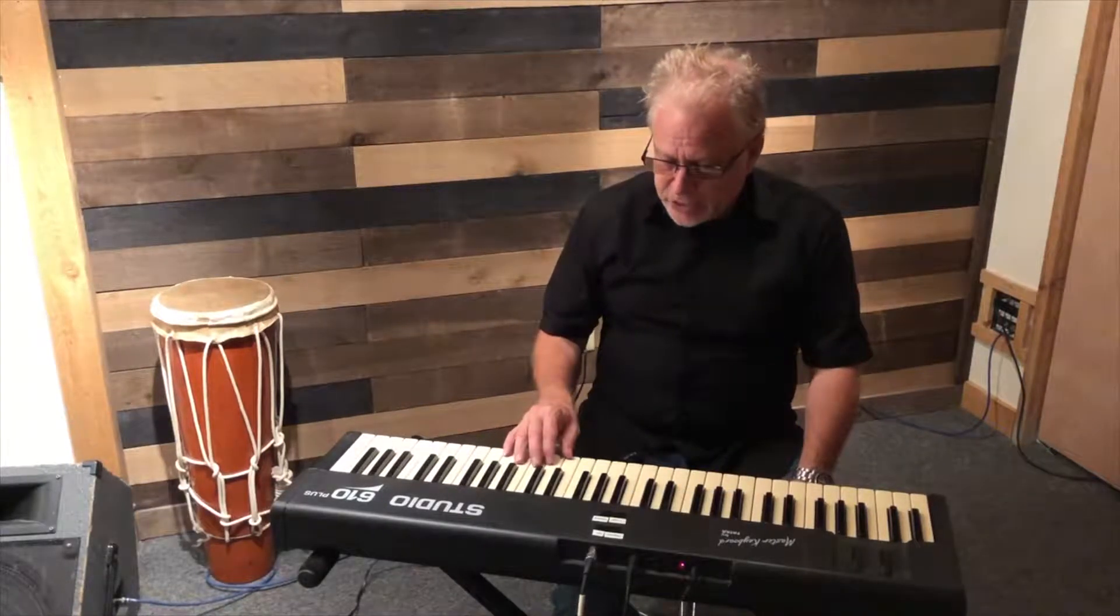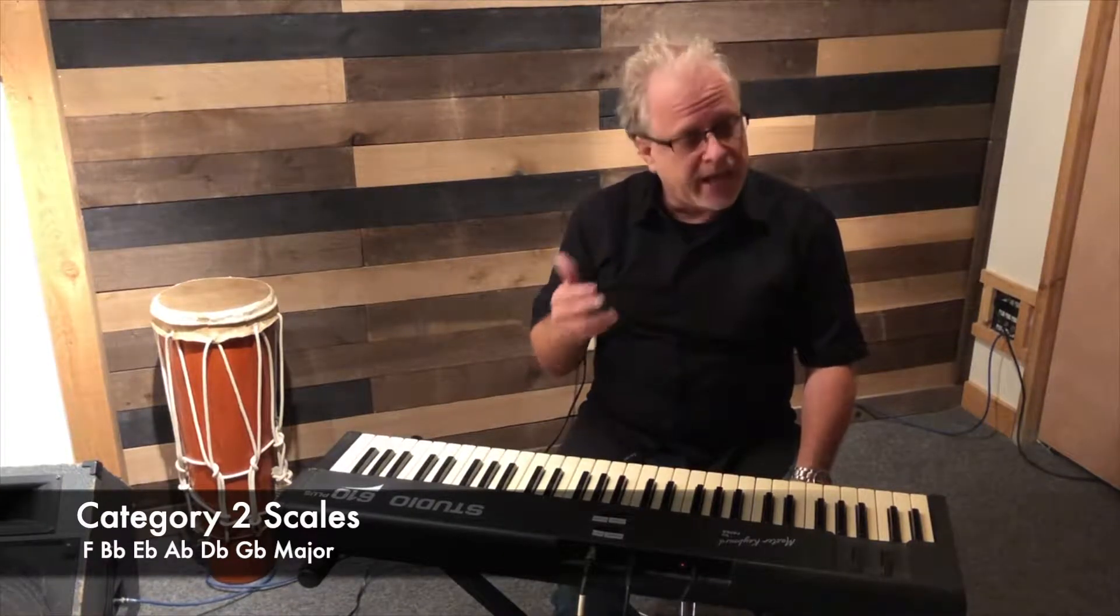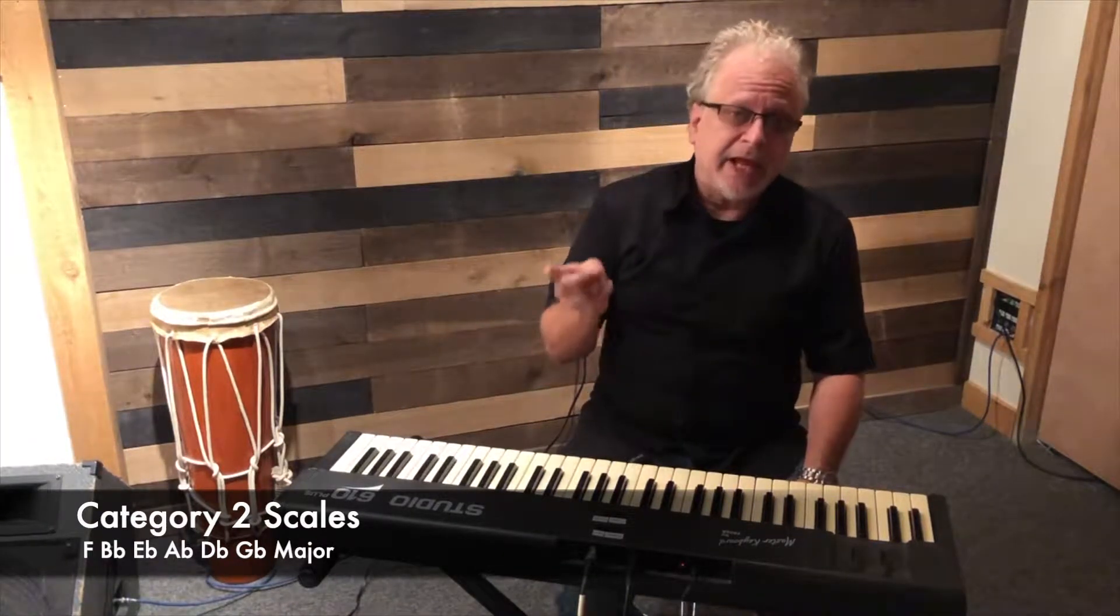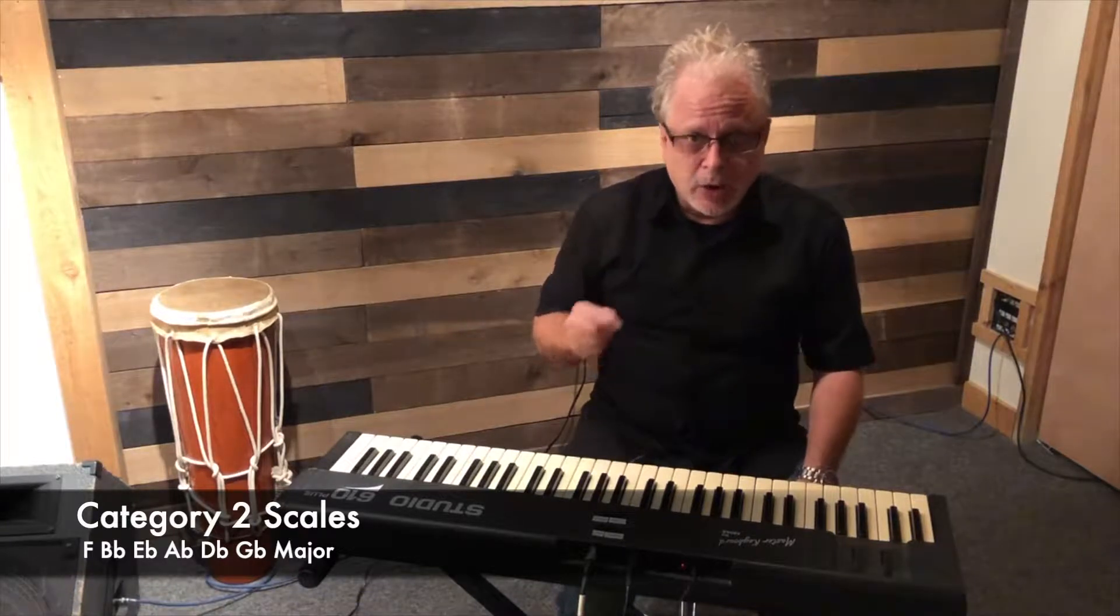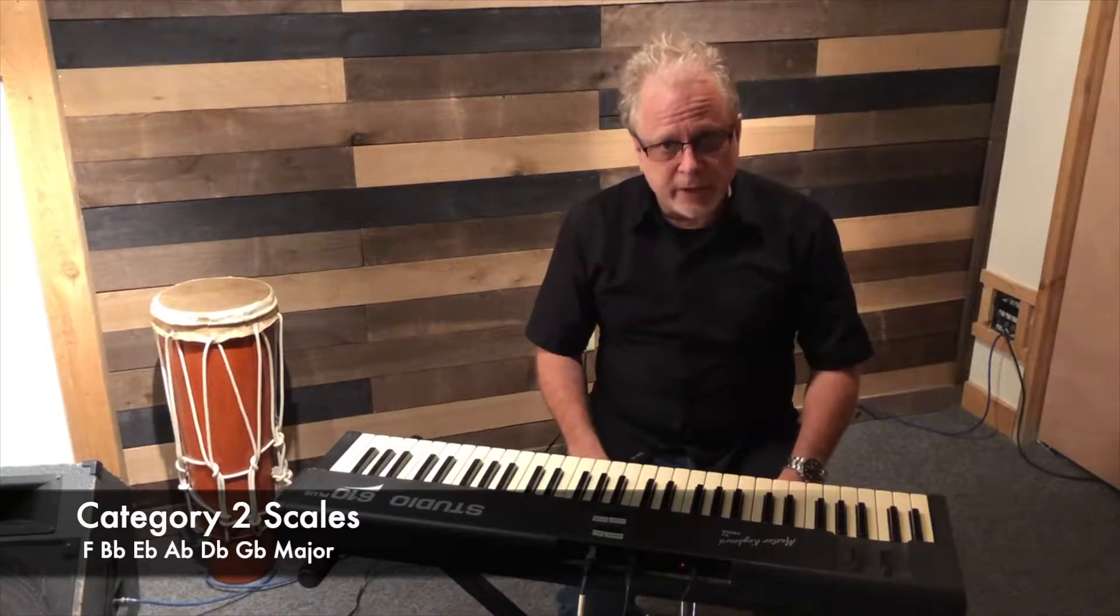Now we're going to look at the remaining scales, which are Bb, Eb, Ab, Db, and Gb major. I call these Category 2 scales because while they don't have the exact same fingering, they do share something in common.